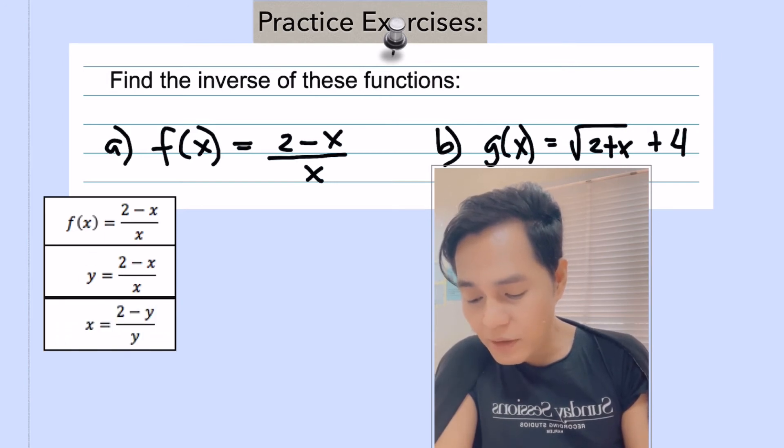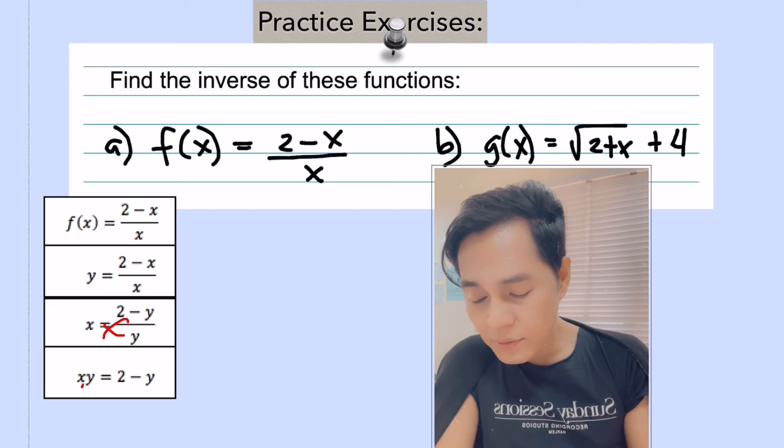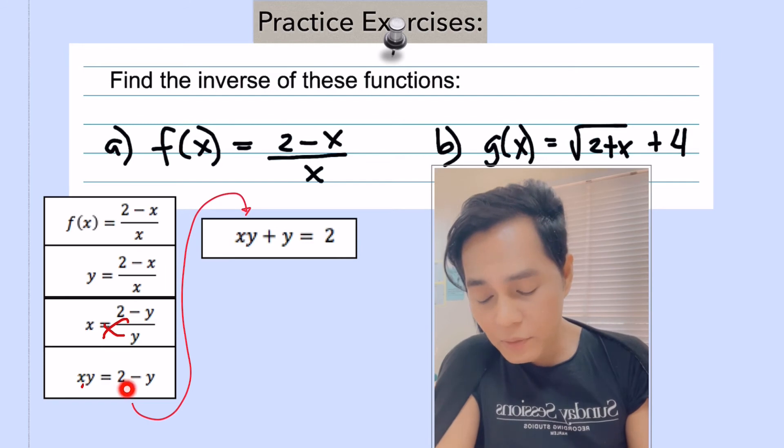So there you go. And then after that, we do cross multiplication. And that is what is happening now. Then after that, observe here. So we are going to transpose y on the other side. We combine. And then we factorize y.